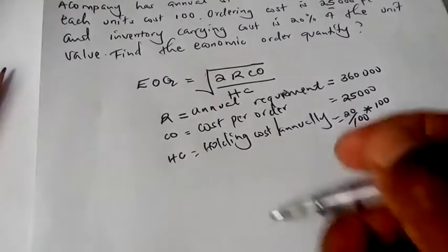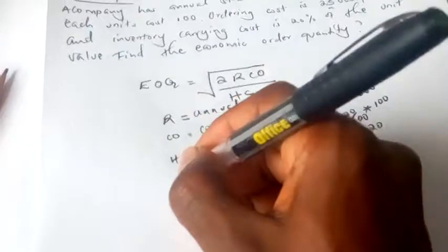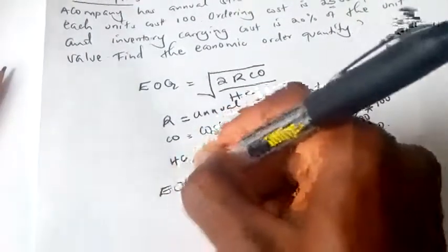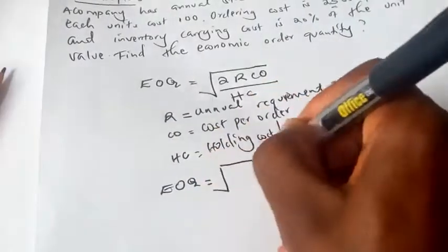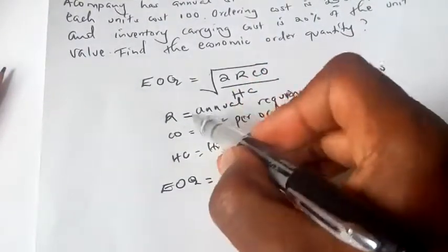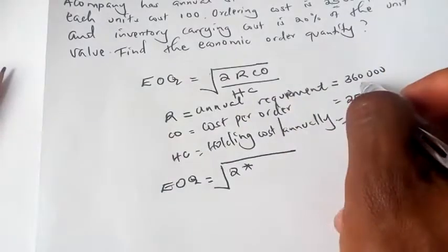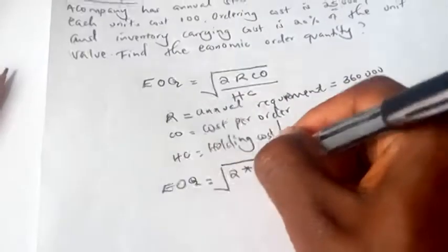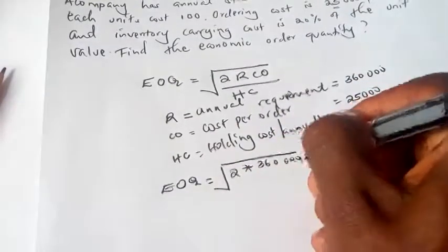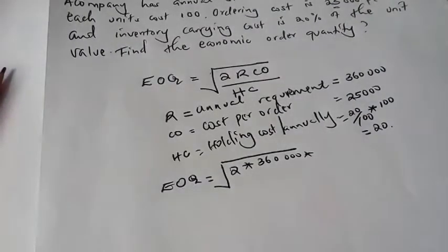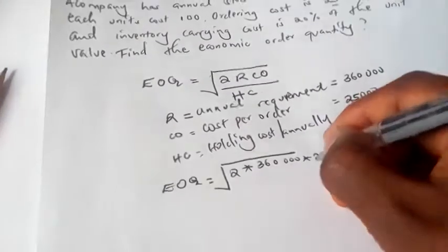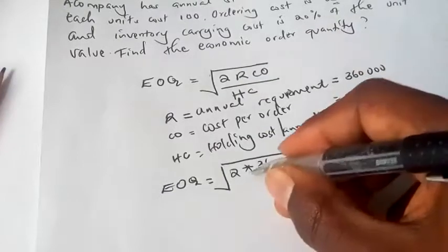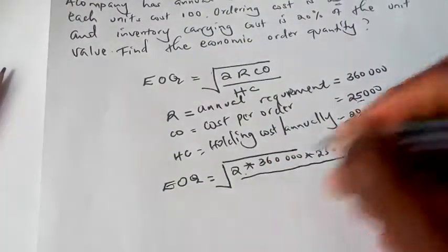So the next step is to do the replacement. We have economic order quantity is equal to the square root of 2 multiplied by R, which is 360,000, multiplied by cost per order, which is 25,000, divided by 20.